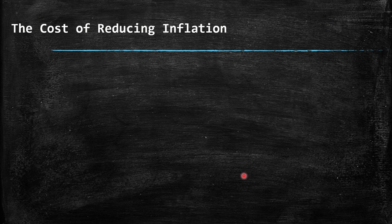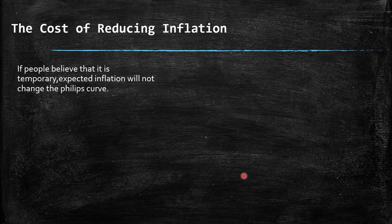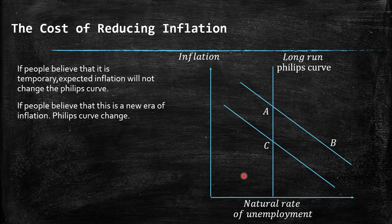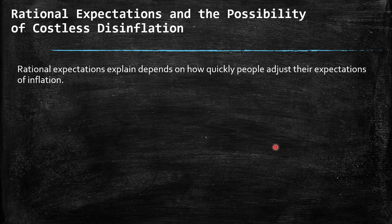What is the cost of reducing inflation? The answer is simply: more unemployment. In the short run, we move from A to B — lower inflation but higher unemployment. In the long run, we face lower unemployment returning to its natural rate, but the same level of inflation. The cost is the unemployment you need to face. Rational expectations explain that this depends on how quickly people adjust their expectations of inflation. If they change based on what the Federal Reserve or the economy signals, there may not be much effect on the real economy.